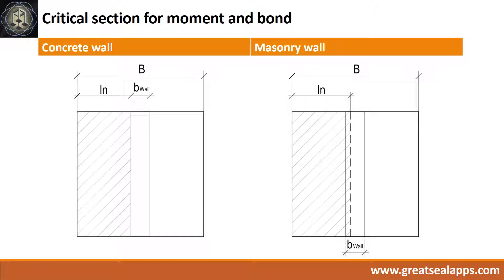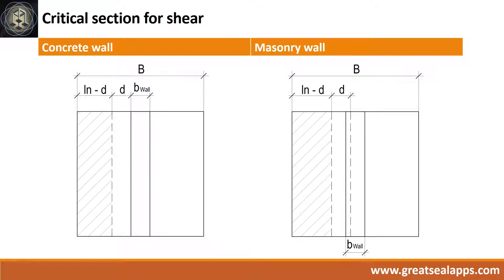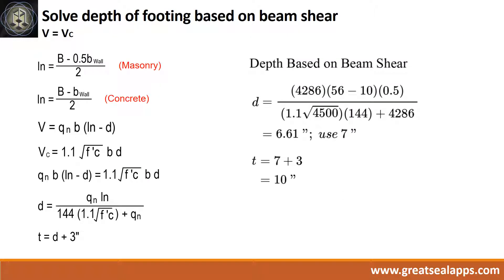Critical sections for moment and bond. Critical sections for shear. Following the given computations, the effective depth is 7 inches and total depth is 10 inches.